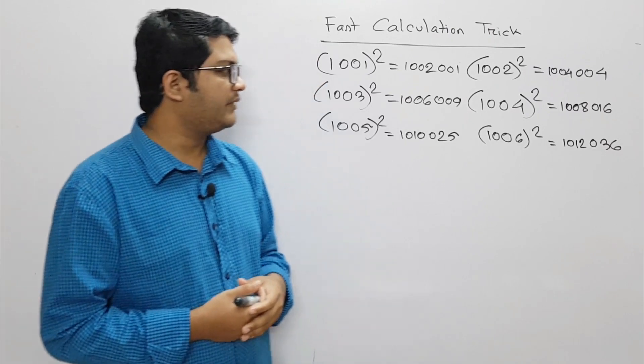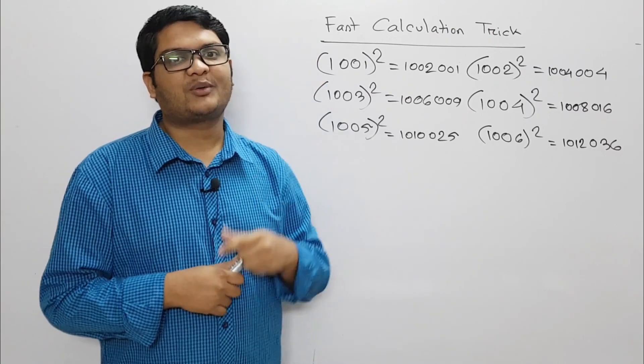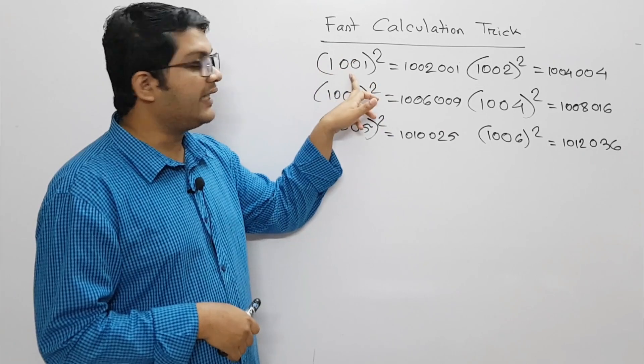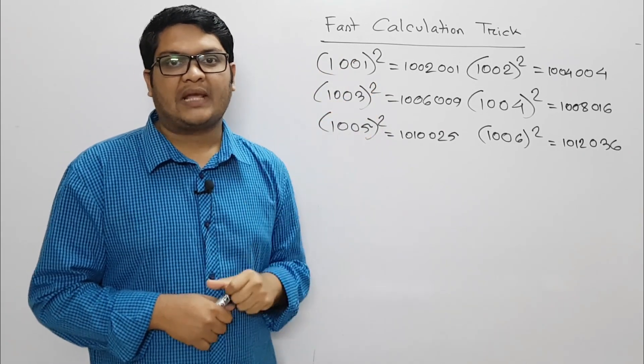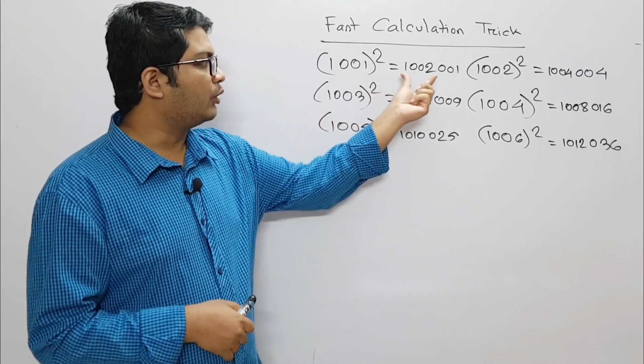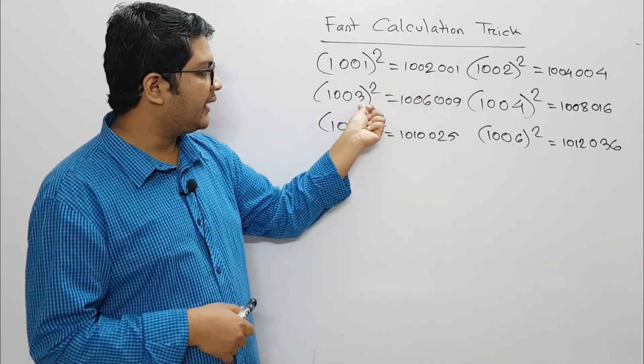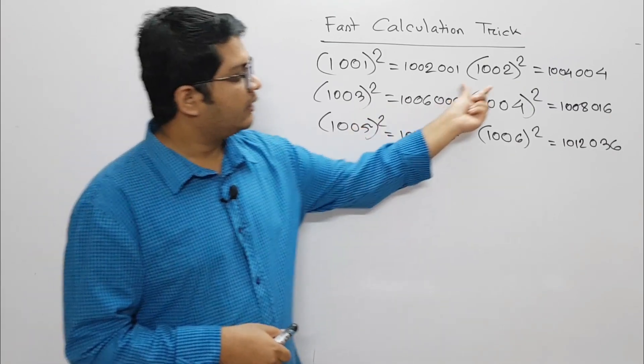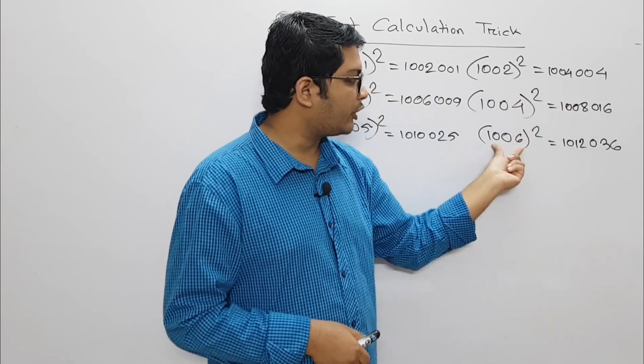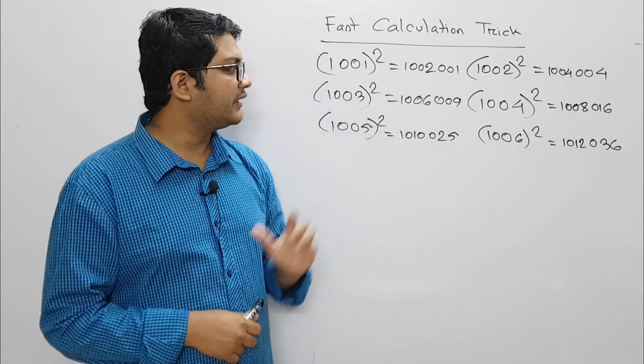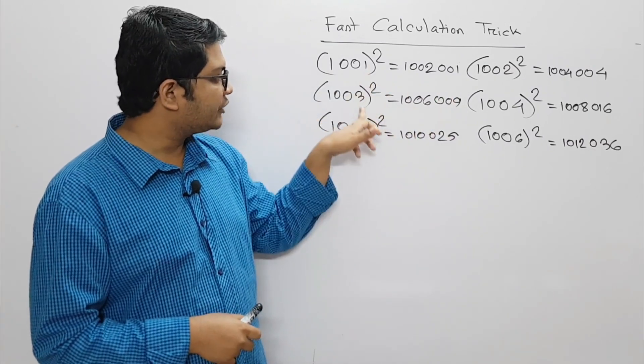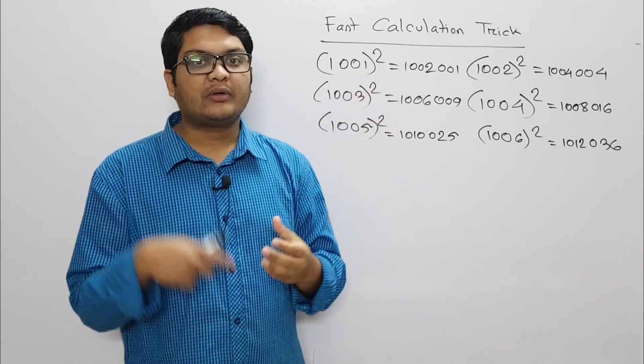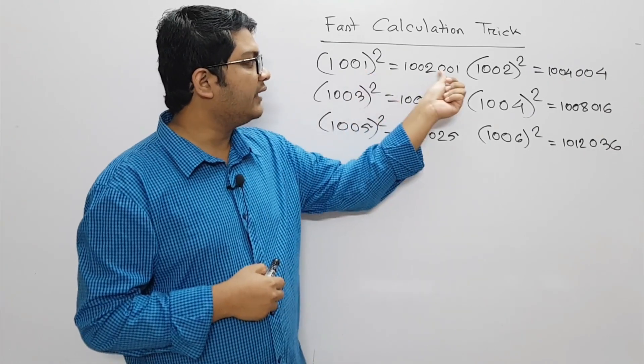The trick is this: look at how many ones we have. If this is 1, then we have to do 1. If this is double 2, then we have to look at 101 squared equals 10201. 102 squared equals 10404. 103 squared equals 10609.